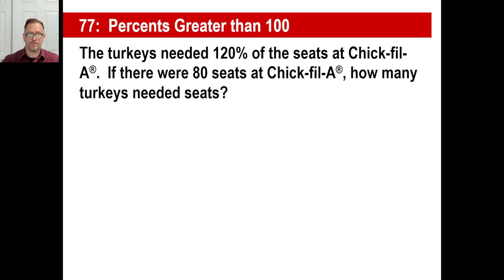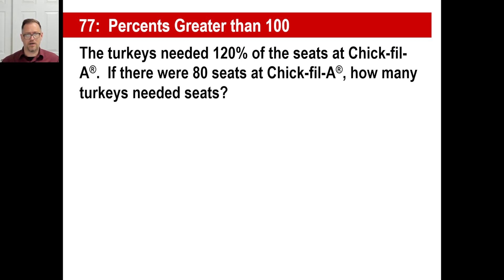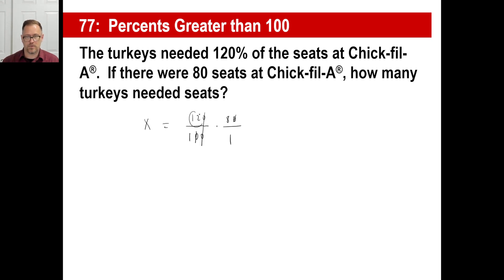Let's try another one. The turkeys needed 120% of the seats at Chick-fil-A. If there were 80 seats, how many turkeys needed seats? Think about what question you're asking: what is 120% of 80? You can write 120% as the fraction 120 over 100, times 80. You can chop off zeros — there's one on top and one on bottom. That leaves 12 times 8, which is 96. There you go.